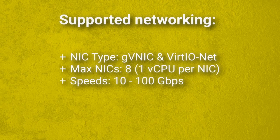Supported network includes two different NIC types: GVNIC and VirtIO. The maximum supported number of NICs is 8, but you must have at least 1 vCPU per NIC, and speeds range between 10 and 100GB.